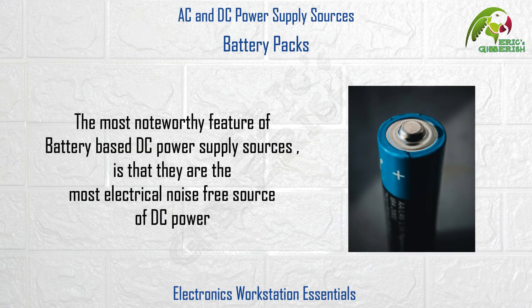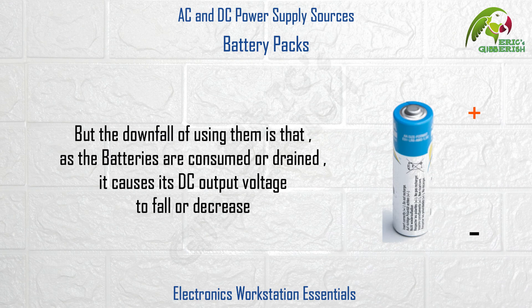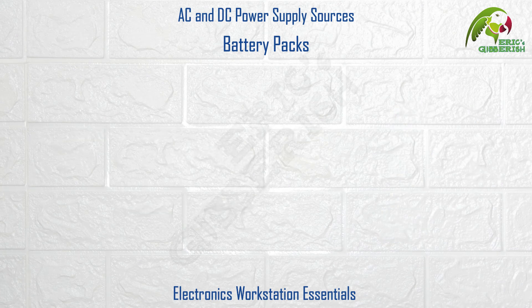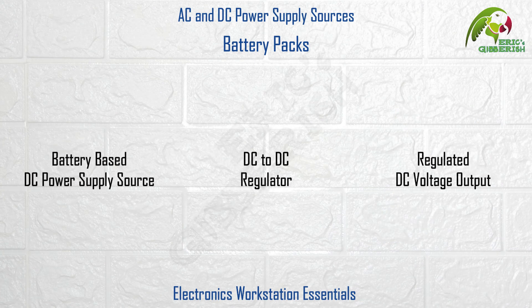The most noteworthy feature of battery-based DC power supply sources is that they are the most electrical noise-free source of DC power. However, the downside of using them is that as the batteries are consumed or drained, it causes the DC output voltage to fall or decrease. Hence, it is always advisable to use a DC to DC regulator following the battery-based DC power supply source.